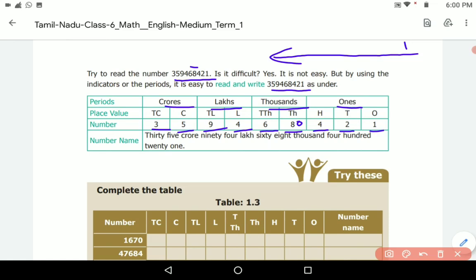So we have represented this number in this number chart and we have arrived at the correct place value. So this number is 35 crore, 94 lakh, 68 thousand, 421. Now it is easy, right? Fine.